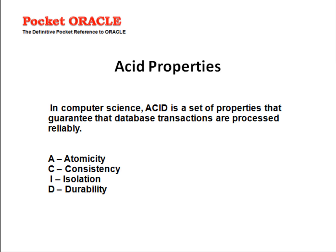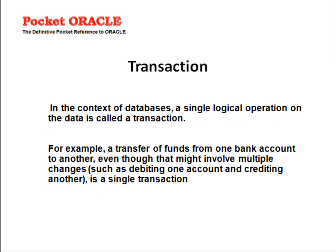In the world of computer science, ACID is a set of properties that guarantee database transactions are processed reliably. A stands for Atomicity, C stands for Consistency, I stands for Isolation, and D stands for Durability.